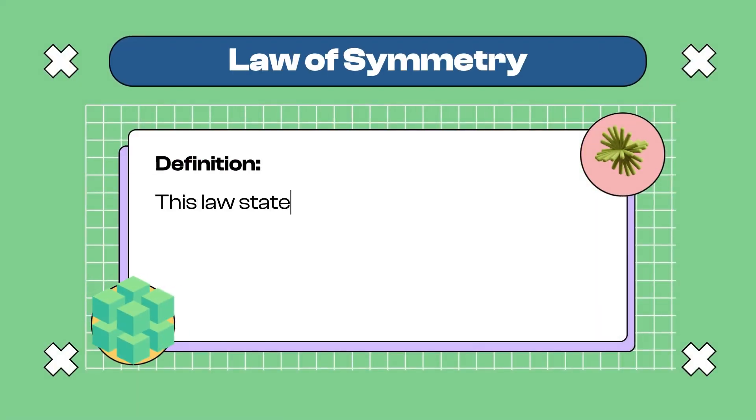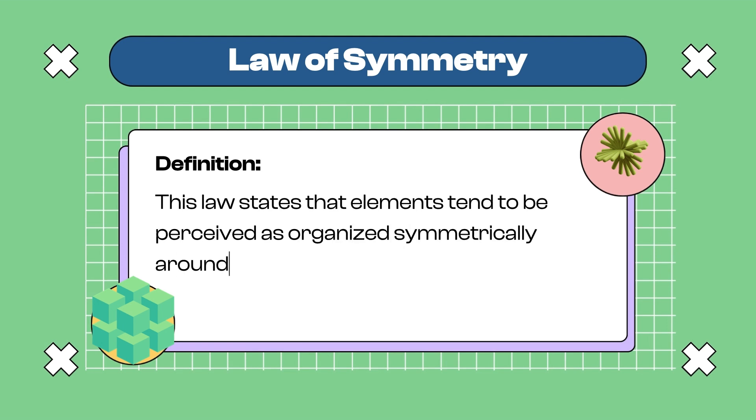Fourth: The Law of Symmetry. The Law of Symmetry states that elements tend to be perceived as organized symmetrically around a center point or an axis. If we balance the elements in the visual field, we can organize them. When we arrange elements on screen, we can balance them and apply the Law of Symmetry to create a design focal point.